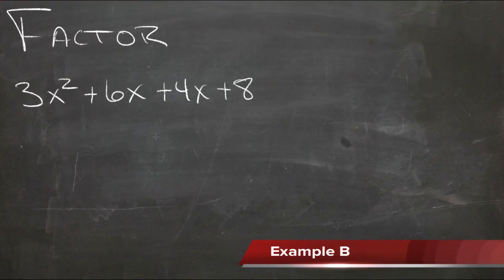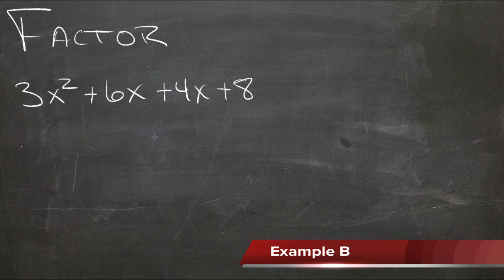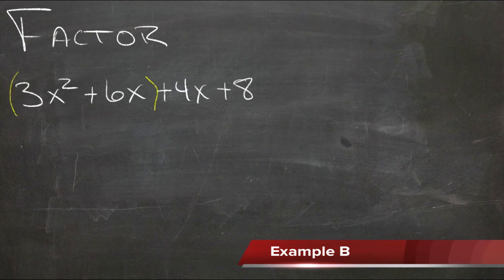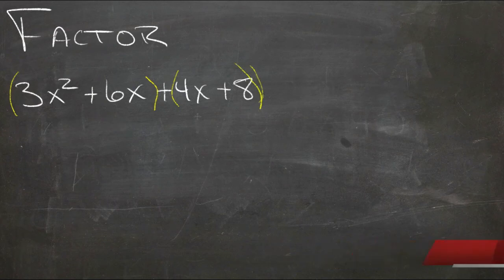Factoring this polynomial is pretty much the same process as the last one. We're just going to group things together so that we can pull something out of each pair, and then we'll see if those things can factor afterward. So our two pairs here are going to be 3x squared plus 6x, and 4x plus 8.